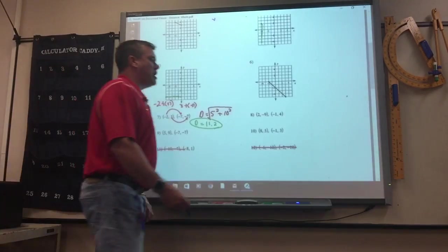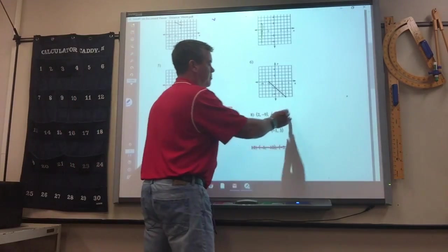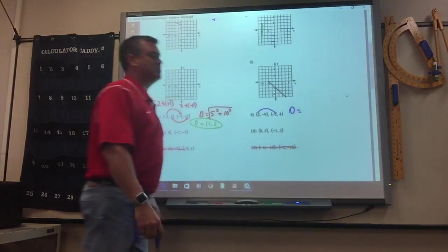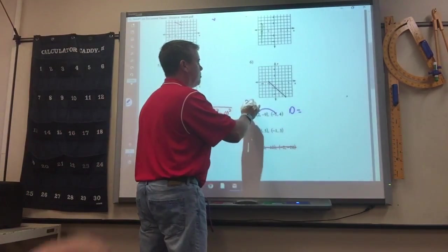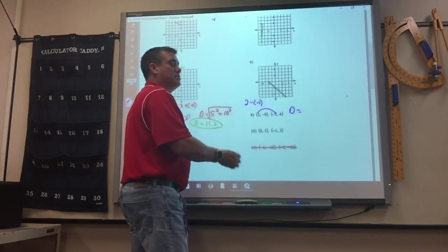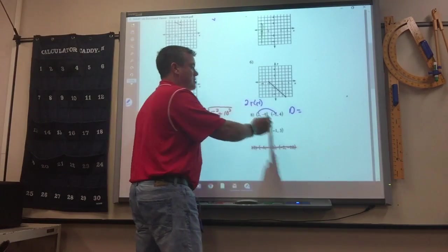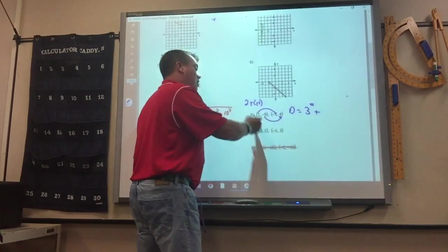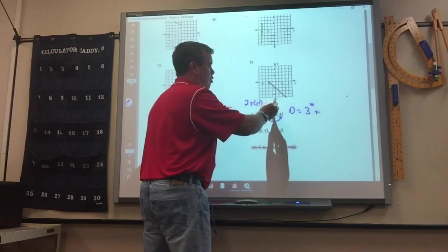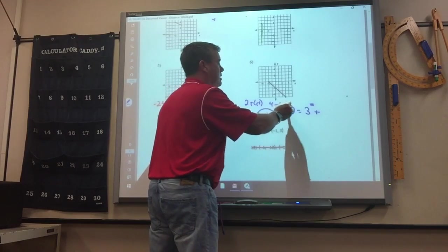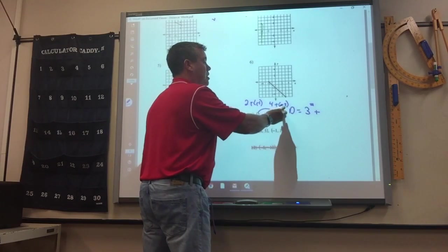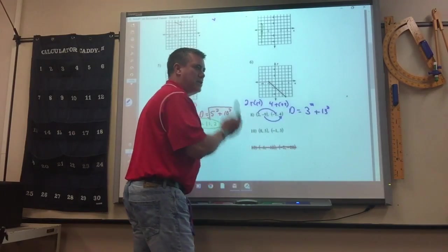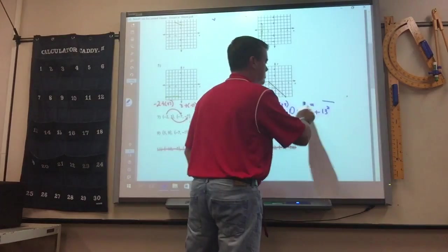Okay. So for number 8, the x minus x, 2 take away negative 1 is 3, because you change the sign change the sign. So it's 3 squared, plus the y minus the y. Now I'm going to do it backwards. 4 take away negative 9 is 13 squared. If you would have did it this way, you would have got negative 13 squared. So 3 squared plus 13 squared, 13.3.